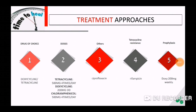Other antibiotics effective against scrub typhus include ciprofloxacin, which is a fluoroquinolone antibiotic. If tetracycline resistance develops, we opt for rifampicin. The prophylaxis dose for scrub typhus is doxycycline, given at 200 mg weekly.